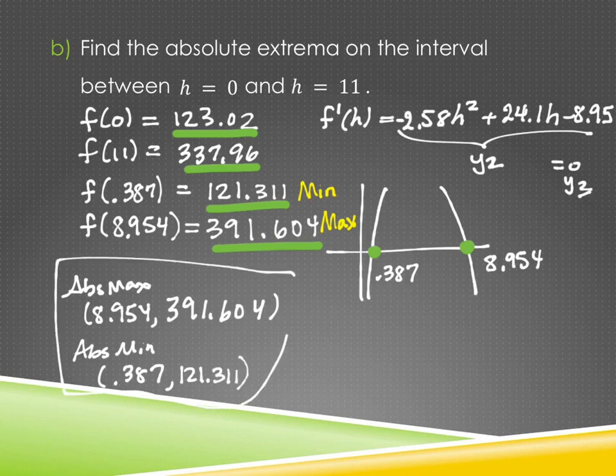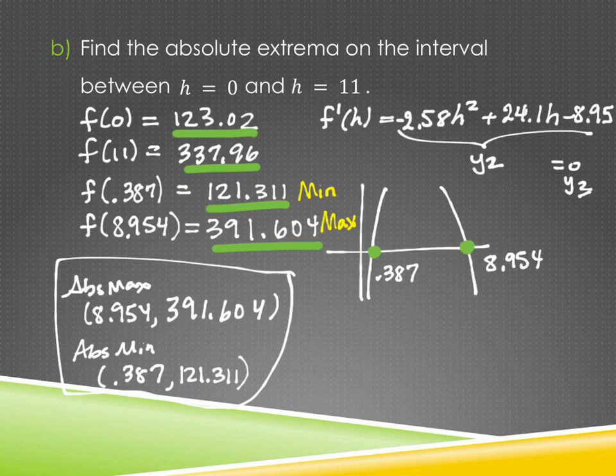That's the solution. You have to show that you've tested all those locations — you can't just decide not to test the endpoints or the relative extrema and get lucky. You have to show that you've checked them all and then made an educated decision based on that.